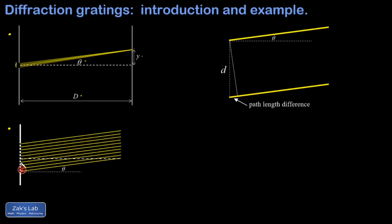If this special angle gives a path length difference of one wavelength between two adjacent rays, then the third ray up from the bottom has a path length difference of one wavelength relative to the ray just below it — so it's in phase with that — and two wavelengths relative to the bottom ray, so it's in phase with both. We can continue this reasoning all the way up the grating: at this special angle theta, every single wavelet from every slit is interfering constructively, which very strongly concentrates the light at this angle.